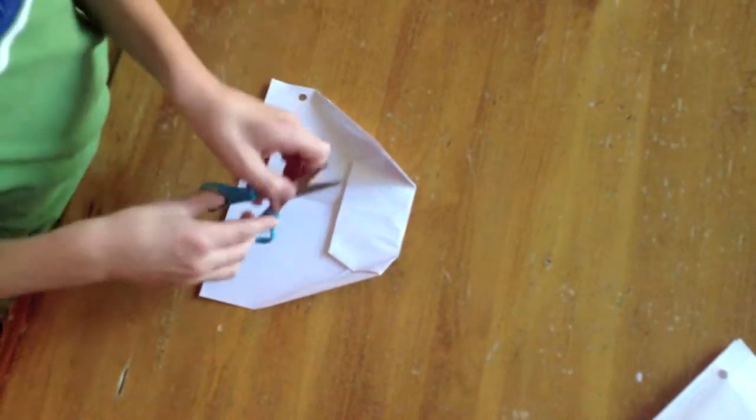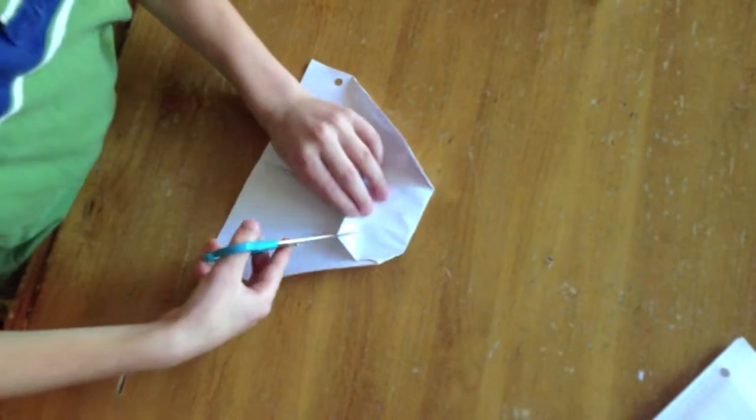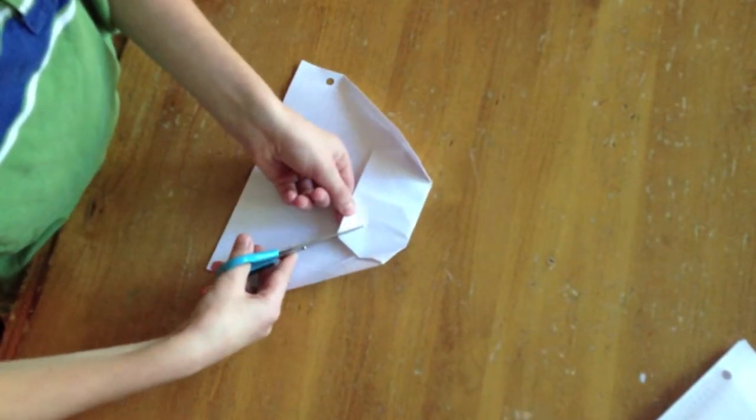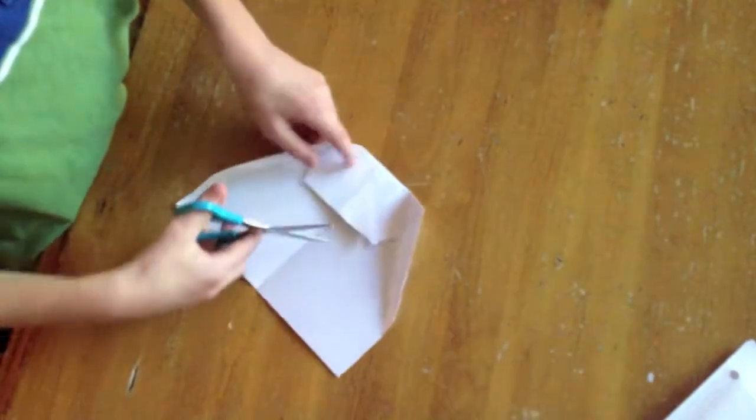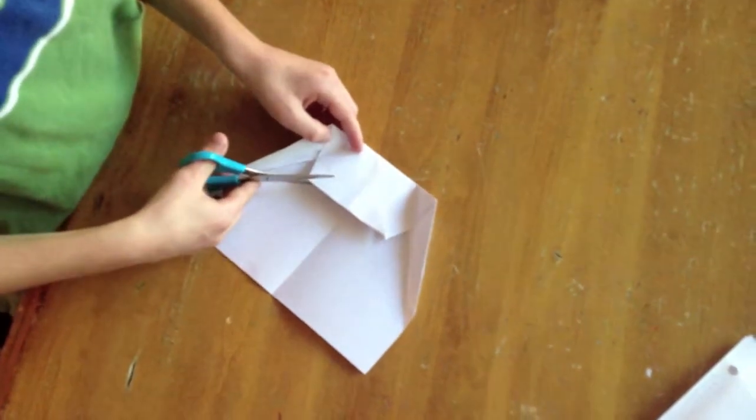Then you take a scissors and cut along the crease that you cannot see on the video camera but you will be able to see it when you are making it. But don't cut it too far.